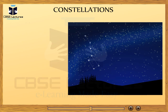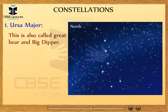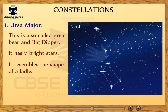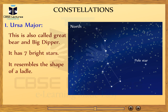Let me tell you about these constellations. Ursa Major is also called the Great Bear and Big Dipper. It has seven bright stars. It resembles the shape of a ladle — the four stars appear as four vertices of a quadrilateral making the bowl of the ladle, and the remaining three stars make the handle. Ursa Major appears in the northern sky and is visible during the summer season in the early part of the night. The pole star is in line with the last two stars of the quadrilateral, so this constellation appears to revolve around the pole star.